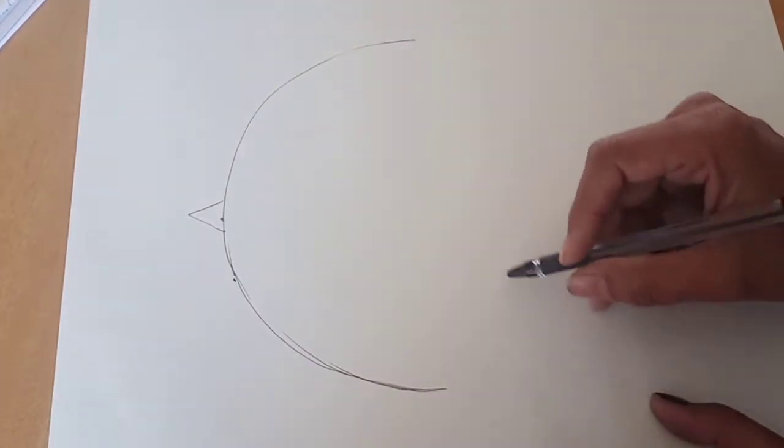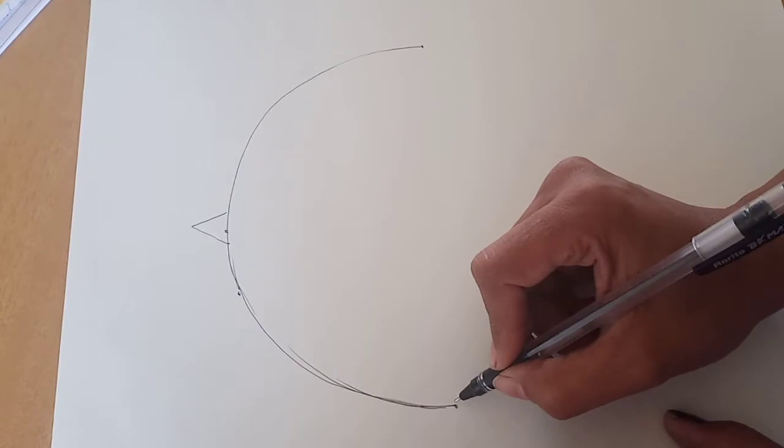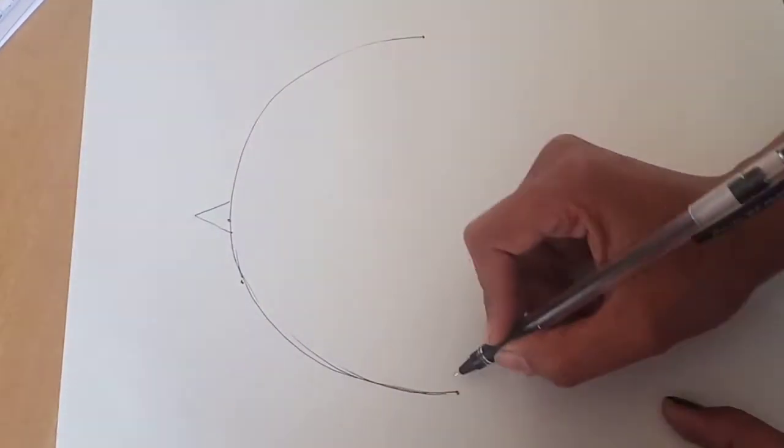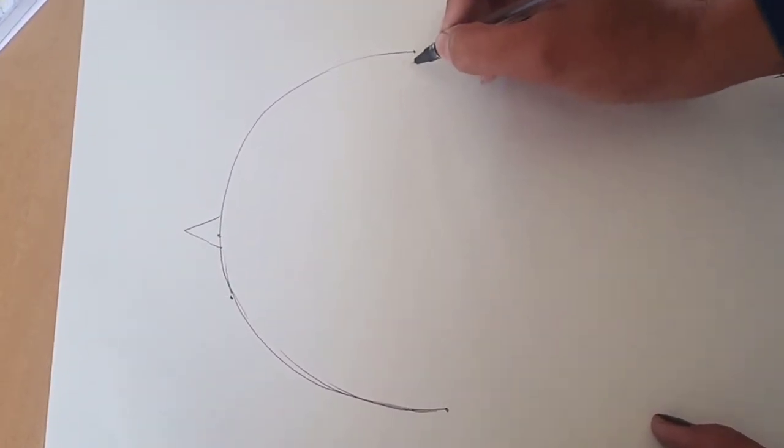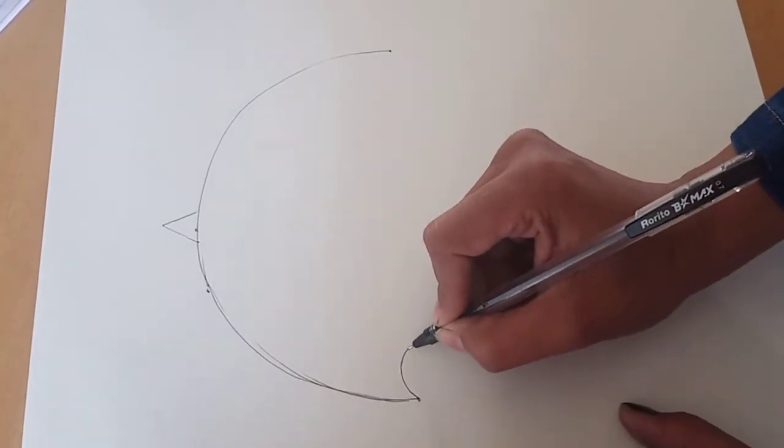Now this point should be at the same level. Here you have to draw semicircles like small petals you have to draw up to here, so I will draw like this: one, two.